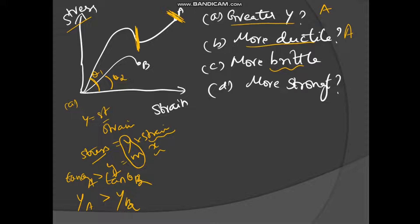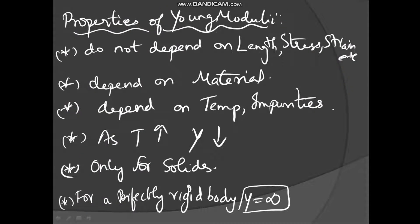More brittle means very little plastic deformation region. Wire B has no plastic deformation region, so B is more brittle. Regarding strength, wire A withstands more stress before breaking, so A is stronger.